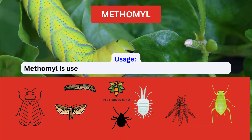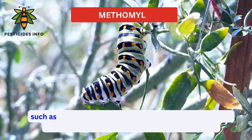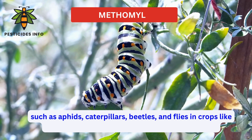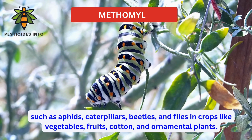Uses. Methomyl is used to control a broad spectrum of insect pests, such as aphids, caterpillars, beetles, and flies in crops like vegetables, fruits, cotton, and ornamental plants.